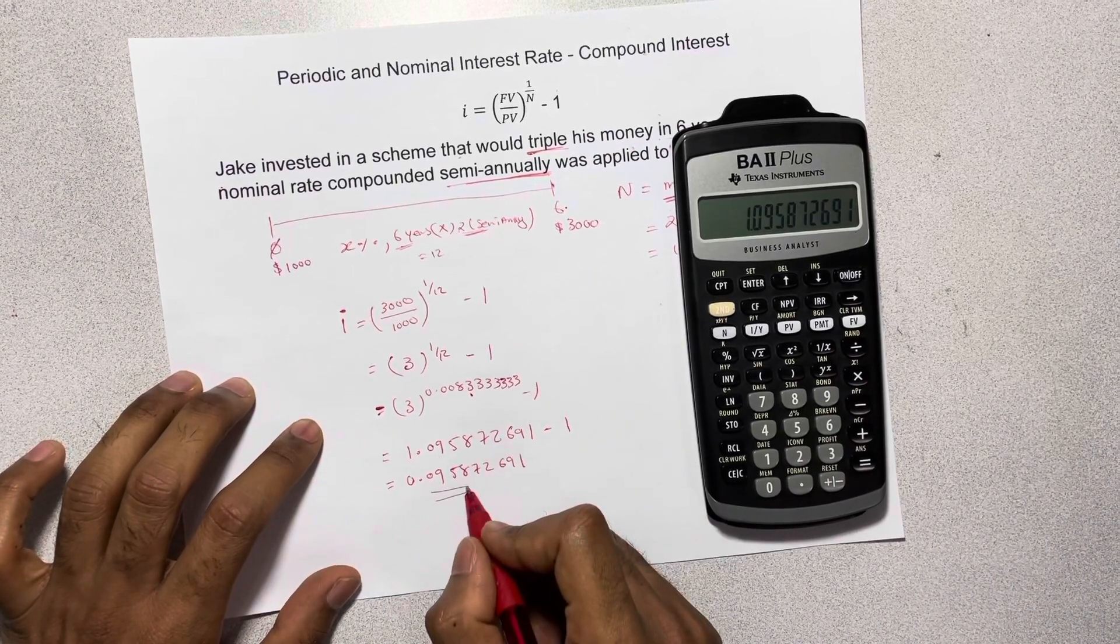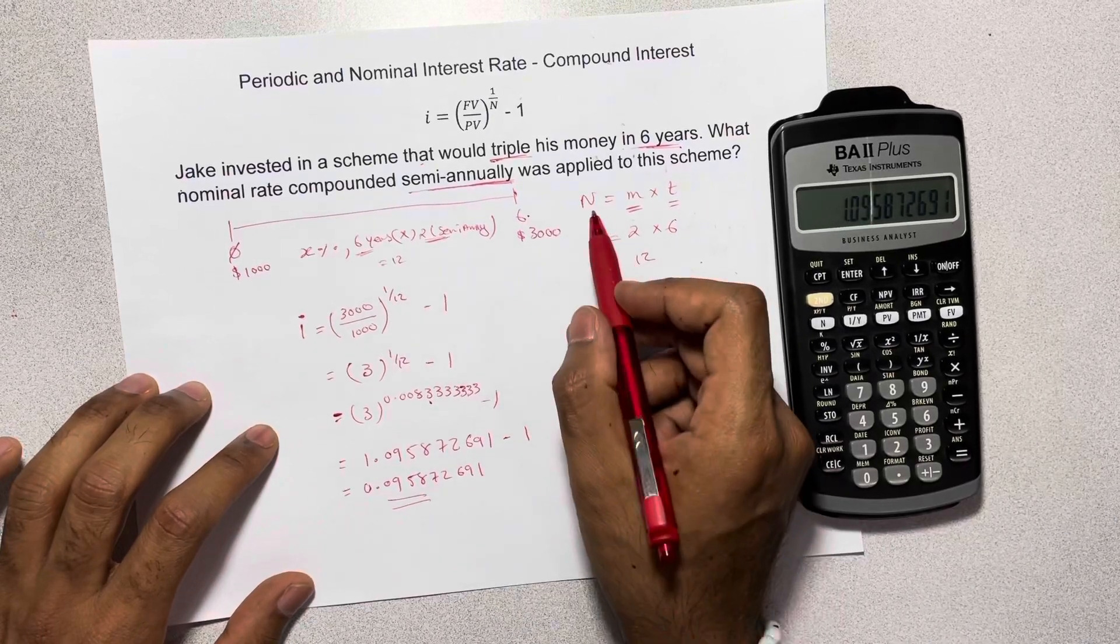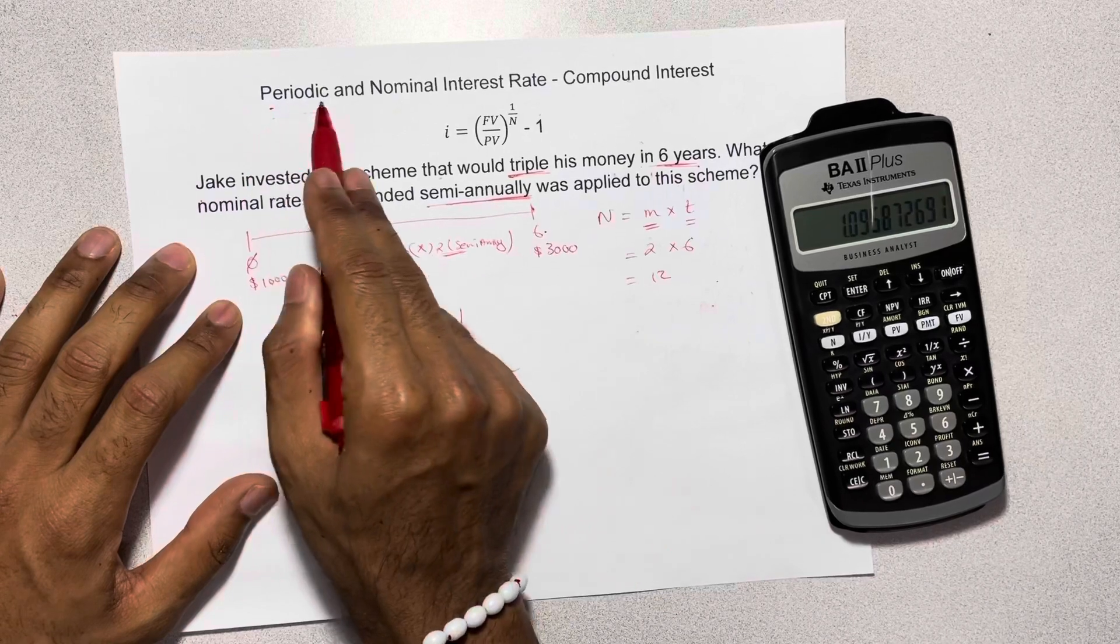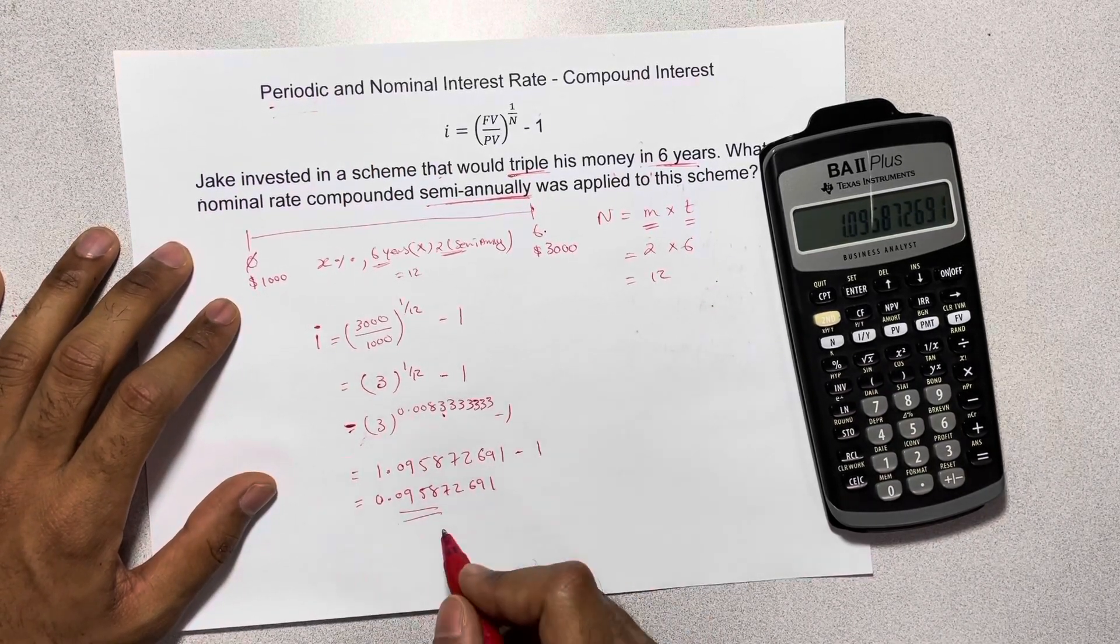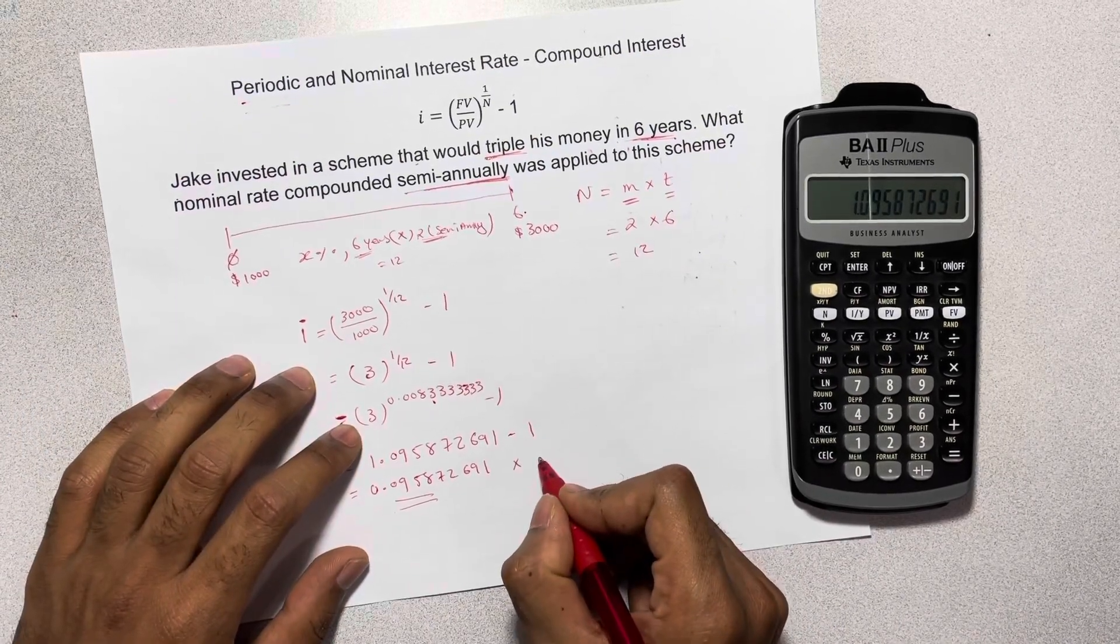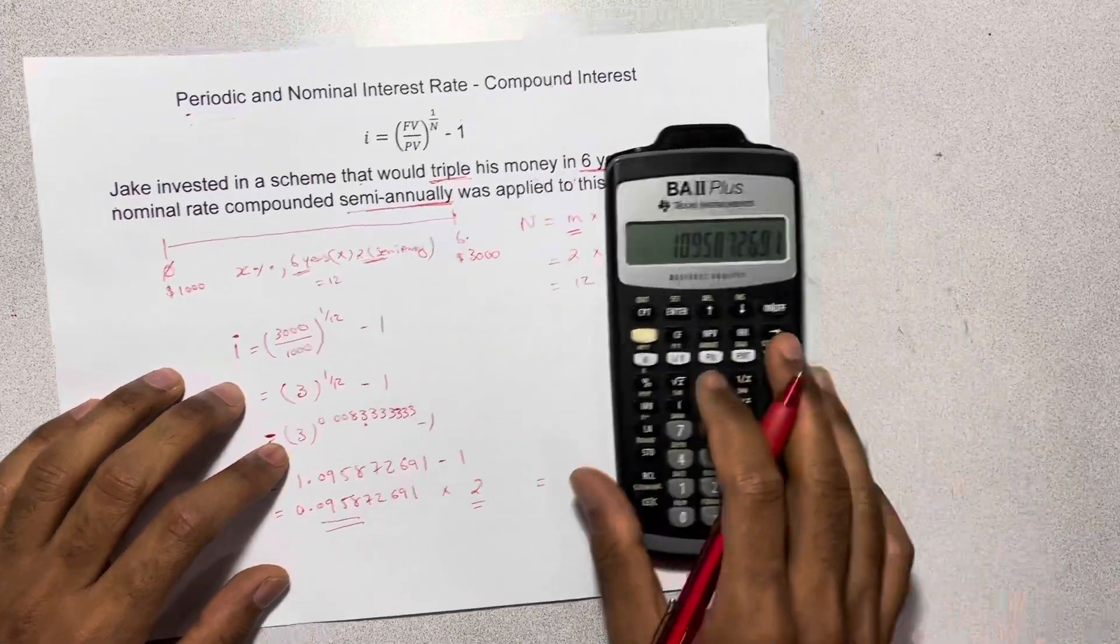Now note that this number is our periodic interest rate. Now in order to change the periodic interest rate into a nominal interest rate, what we need to do is multiply by our compounding frequency, which is 2, which is semi-annually.